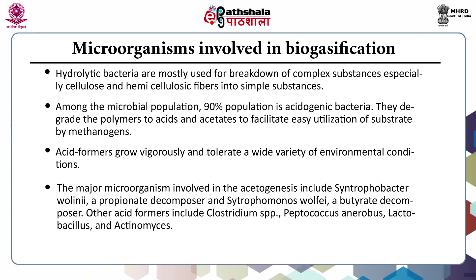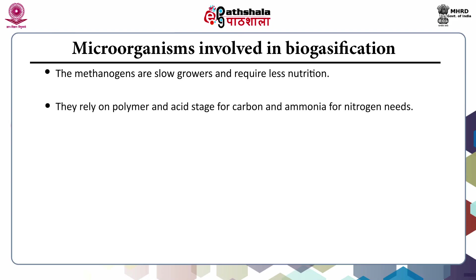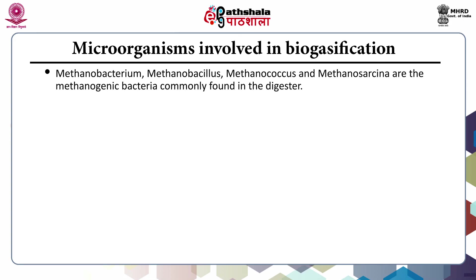Methanogens are slow growers and require very little nutrition. They rely on polymers and acids for carbon and use nitrogen for their nitrogen requirements. They are sensitive to environmental conditions like pH and atmospheric oxygen. Even at very low concentrations, atmospheric oxygen is a main factor that affects methanogen growth. Nitrates and nitrites also inhibit their growth. The optimum pH for methanogens is 7, though they tolerate a pH range of 4.5 to 8. Some methanogenic bacteria are Methanobacterium, Methanobacillus, Methanococcus, and Methanosarcina.